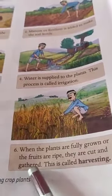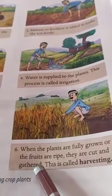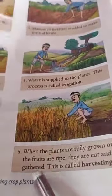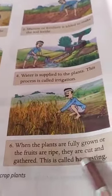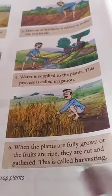When the plants are fully grown and fruits are ripe, they are cut and gathered. This is called harvesting.